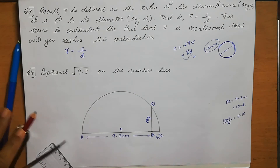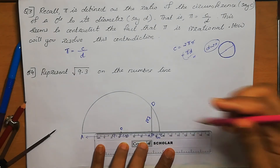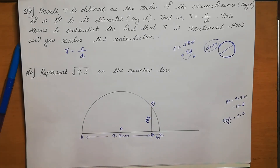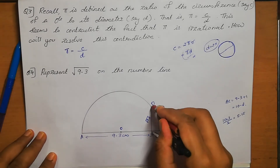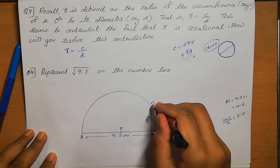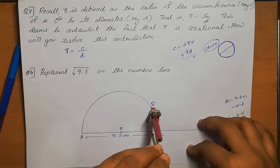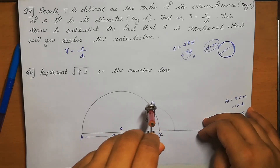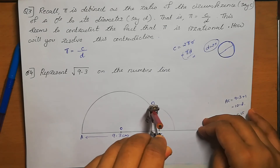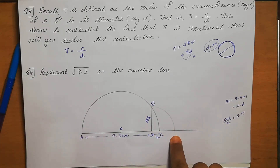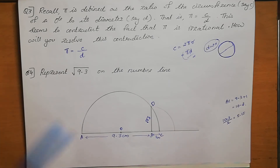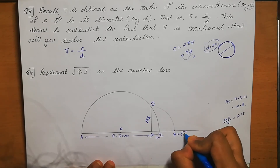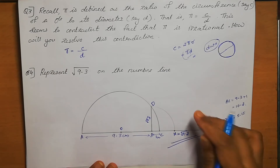To place root 9.3 on the number line, draw an arc with B as centre and BD as radius — since BD equals root 9.3 — so the arc intersects the number line at point M. This point M equals root 9.3 on the number line.